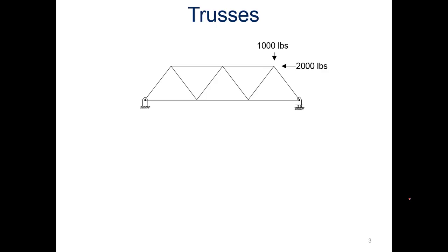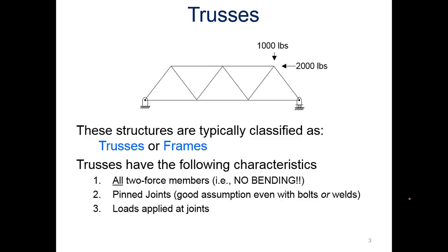We're looking at trusses. Here's an example of a truss. These structures are typically classified as trusses or frames. They have the following characteristics: all two-force members with no bending, pinned joints which are good assumptions even with bolts or welds, and loads applied at the joints, such as we have here with the 1,000 pounds and the 2,000 pounds.